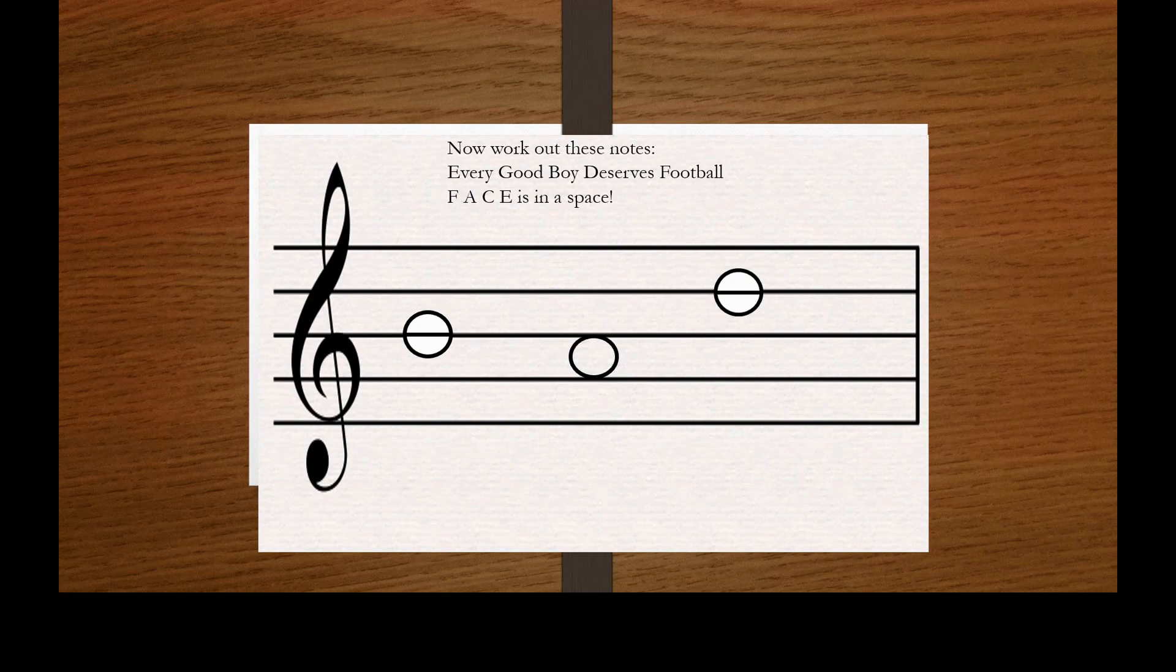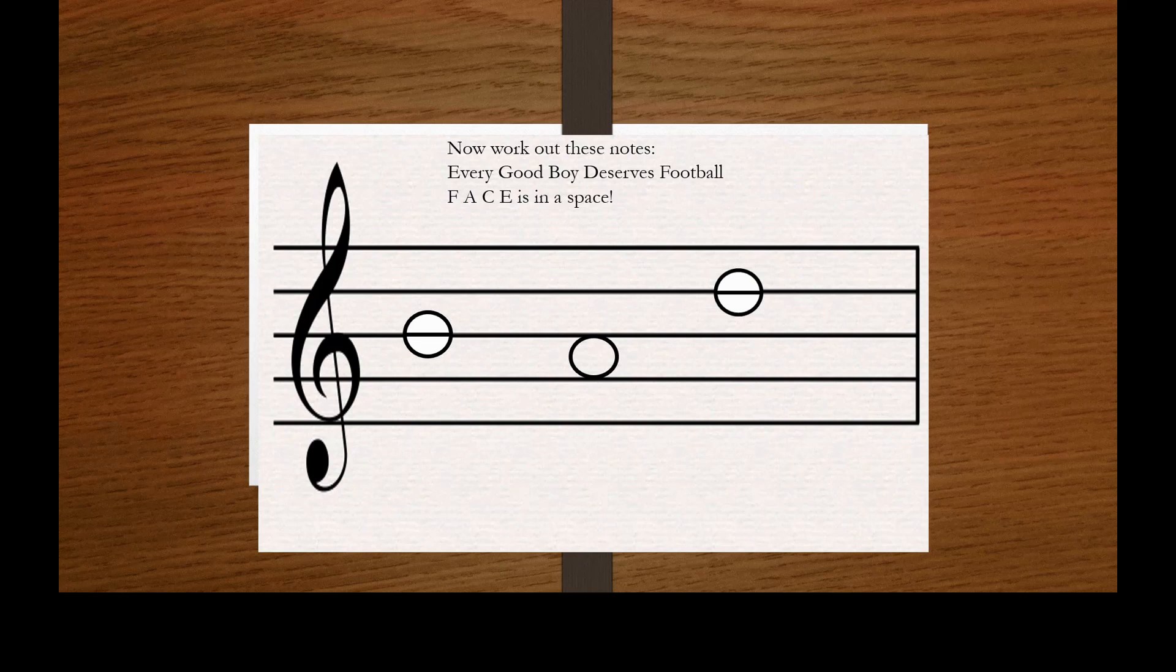We'll do the first one together, and then you've got four more that you can have a go at by yourselves. The first one: we look at the note and we can see there is a line in the middle. So start on the lines: every good boy. That must be a B.